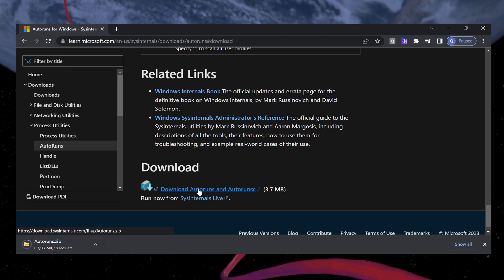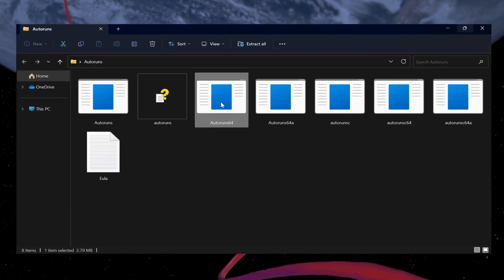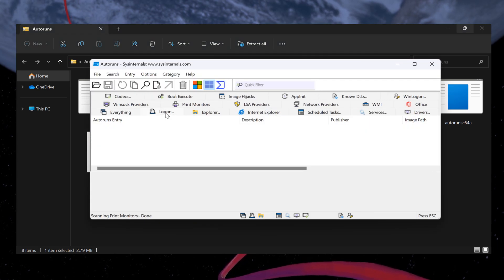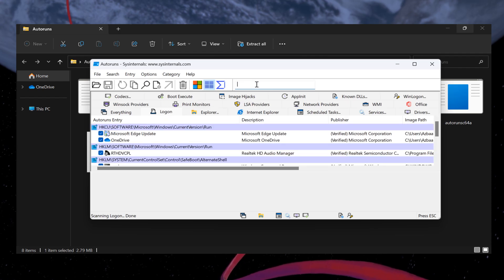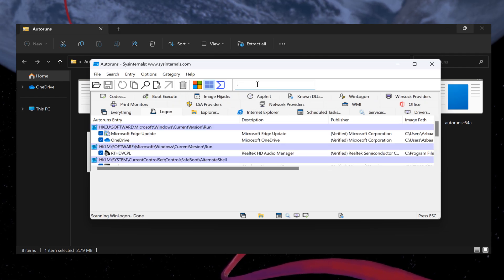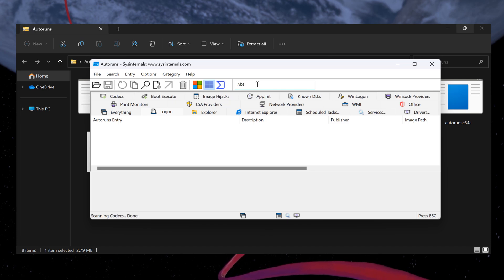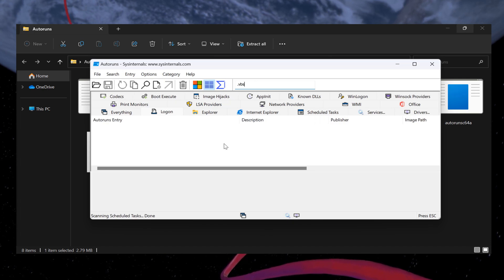Start by downloading and installing the Autorun Utility from the Microsoft website. Once installed, open the utility and look for the Logon tab. Scroll through the list and find any entry related to VBS files. If you find one, uncheck the box next to it. Restart your computer and hopefully, the Cannot Find Script File Error will be resolved.